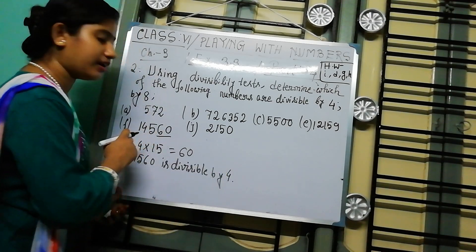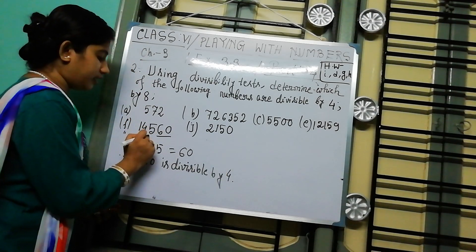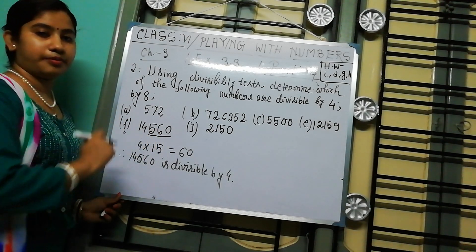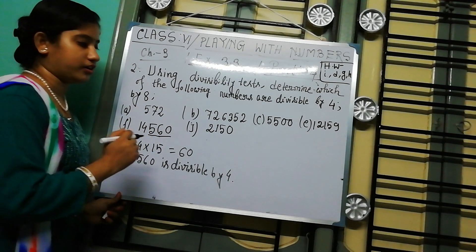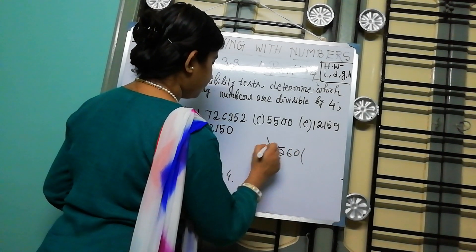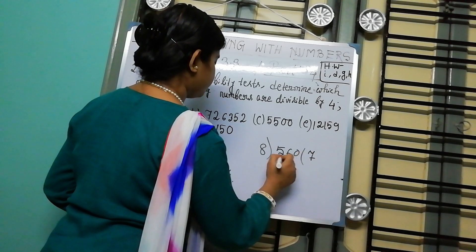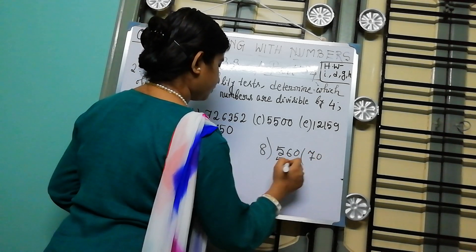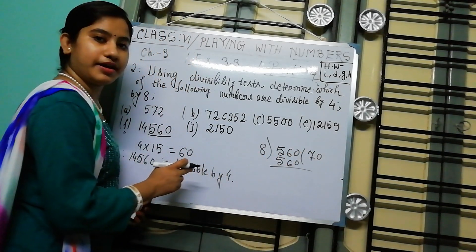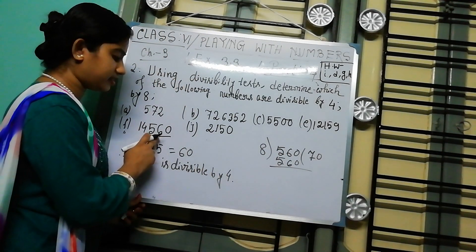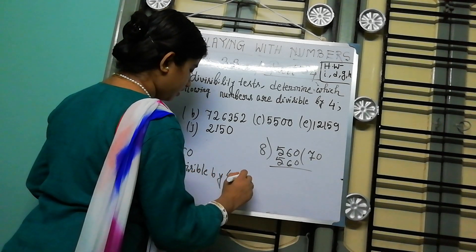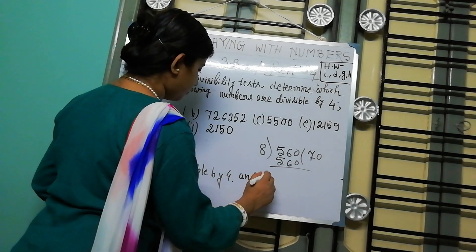Now checking 14560 for divisibility by 8. We take the last 3 digits: 560. Dividing 560 by 8 gives 70 with remainder 0, so 560 is divisible by 8. Therefore the whole number 14560 is divisible by both 4 and 8.